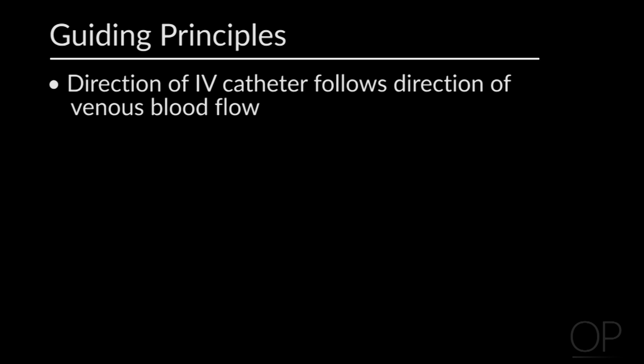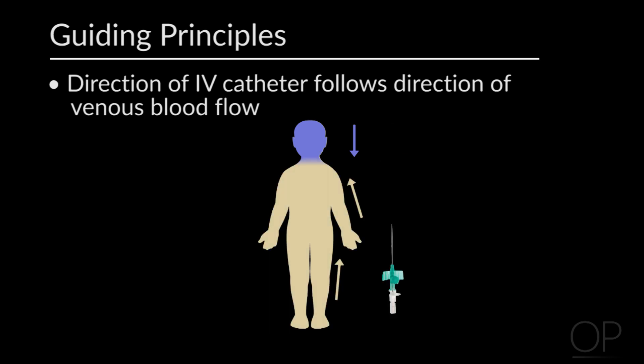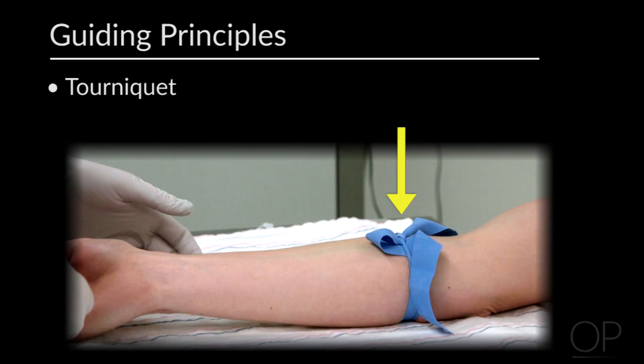Here are some guiding principles. The direction of the IV catheter should always follow the direction of venous blood flow. In the head, the catheter is placed to point down to the feet. For the rest of the body, the catheter is always inserted aiming up toward the head. Tourniquets are usually used to help find veins. Elastic bands can be used on small babies instead of traditional tourniquets, especially for scalp IVs. If a traditional tourniquet is not available, get creative — you can use a glove or even an assistant's hand.